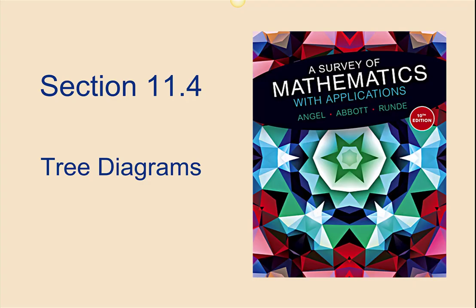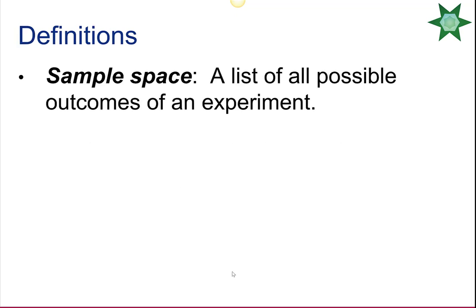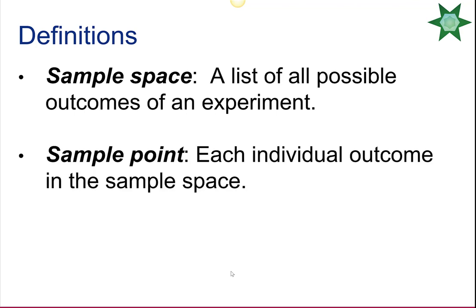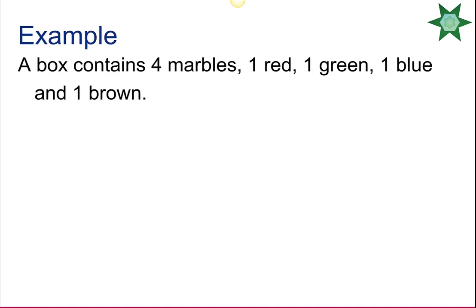Section 11.4 covers tree diagrams and the counting principle. If a first experiment can be performed in M ways and a second experiment in N distinct ways, the two experiments in that order can be performed in M × N ways. The sample space is a list of all possible outcomes, a sample point is an individual outcome, and tree diagrams are helpful for determining sample spaces.